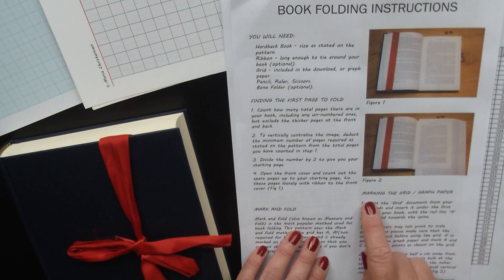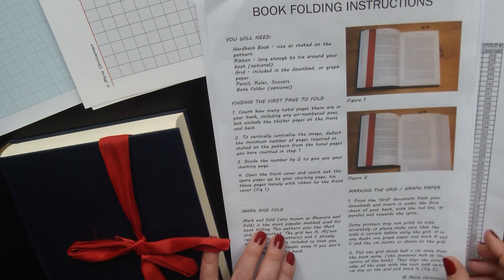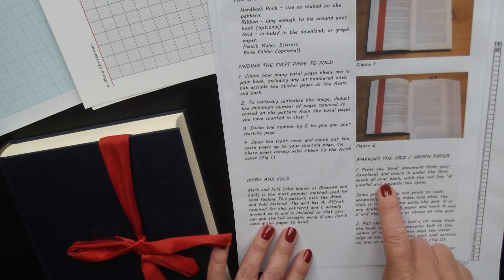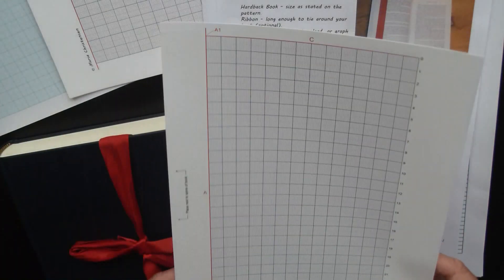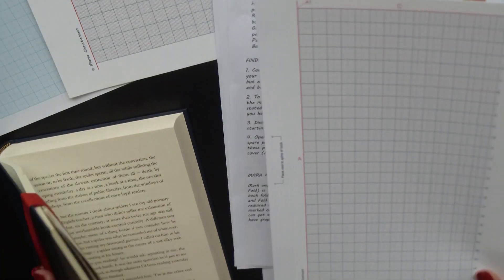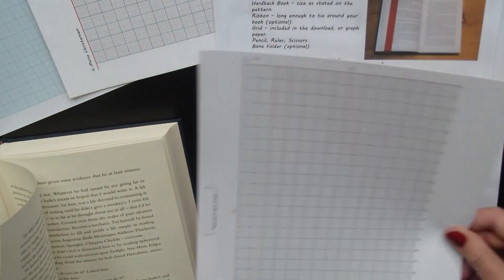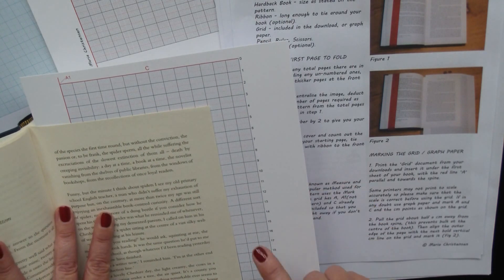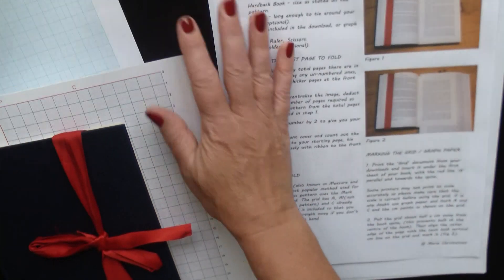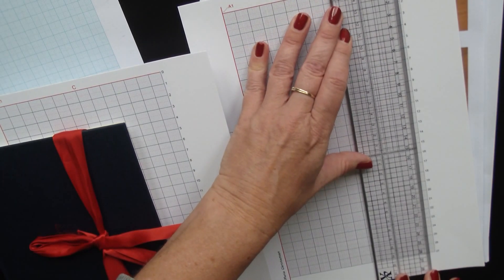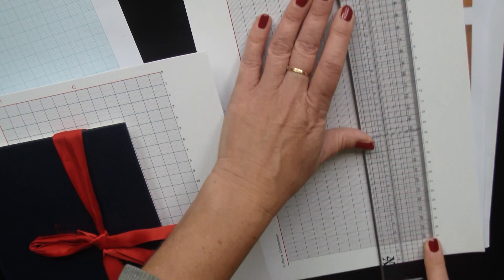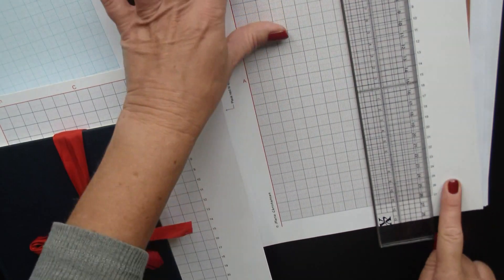So what I'm going to do is start from marking the grid and graph paper. Print the grid document from your downloads and insert it under the first sheet of your book. We get the grid with the red line A parallel towards the spine. Now I do need to make the point about some printers not printing to scale. If you print off the grid, just take a ruler and place it along that edge. Where you've got the 27, that should be right on the 27 line for your ruler. If it's not like this one, don't use it.